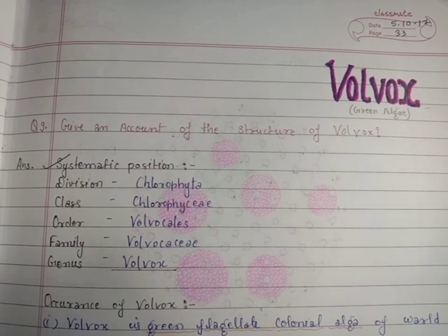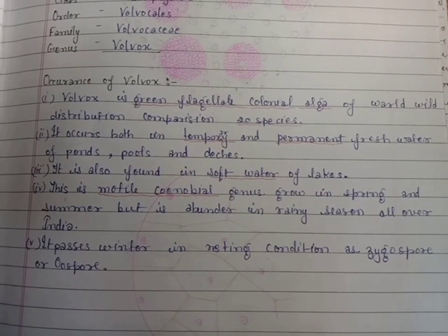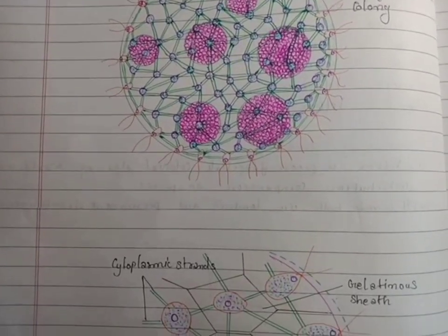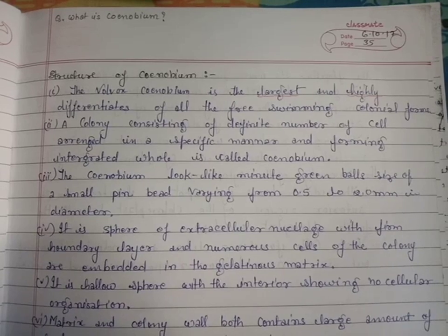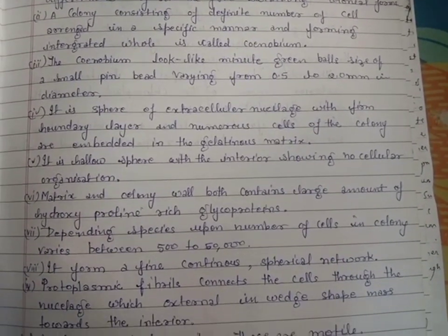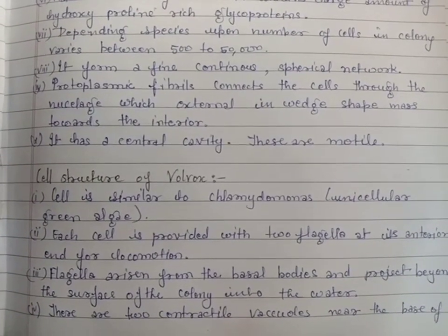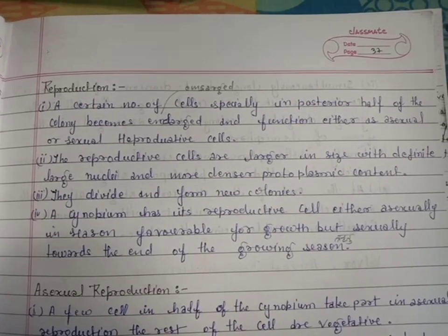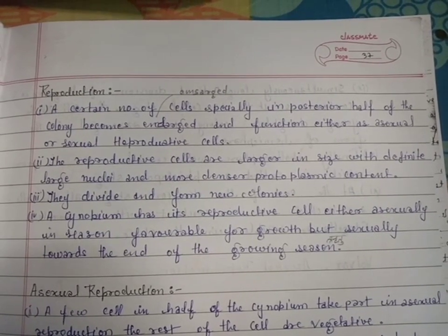There are 10 main topics of Volvox. First, systematic position. Second, occurrence of Volvox. Third, structure of Volvox. Fourth, structure of Volvox. Fifth, cell structure of Volvox. Sixth, reproduction. There are two types of reproduction: first, asexual reproduction, and second, sexual reproduction.